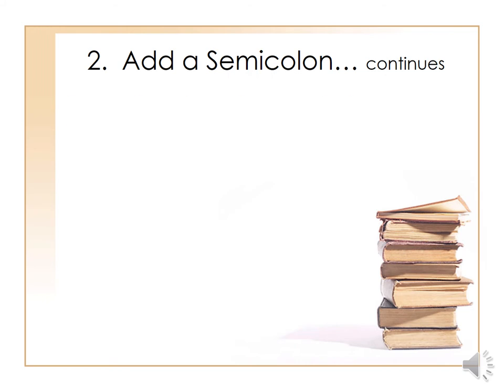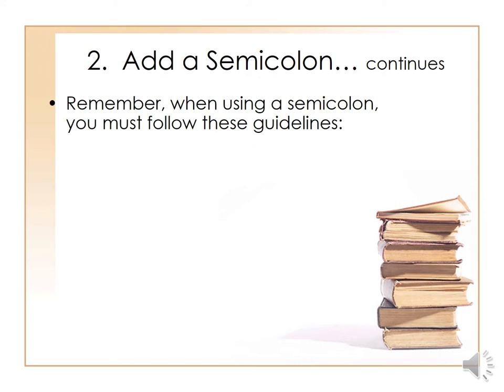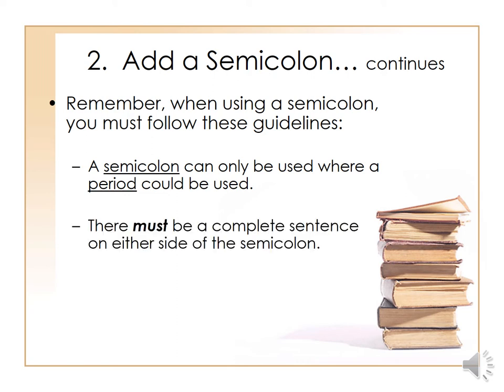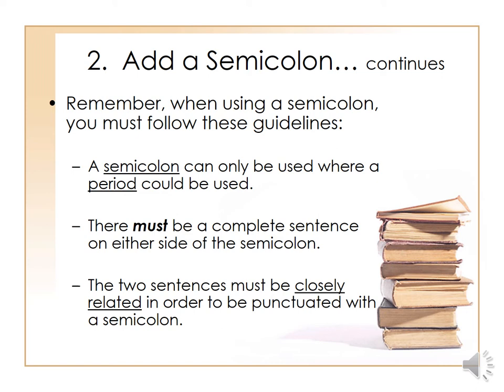Let me give you some guidelines about semicolons. First, you use a semicolon where you would actually use a period — it plays the role of a period to divide sentences. Also, there must be a complete sentence on either side of the semicolon. You cannot have a fragment or a dependent clause on one side and an independent clause on the other and use a semicolon — both sides must be complete ideas. Finally, the two sentences must be closely related in order to be punctuated with a semicolon, talking about the same topic.